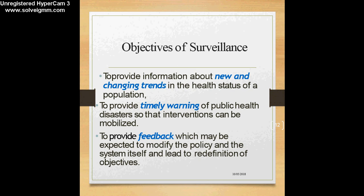The objectives of surveillance: first, to provide information about new and changing trends in the health status of a population. For example, surveillance allows us to know that dengue is always present in a particular population or has a seasonal occurrence — collecting data regularly about the number of new cases, deaths, and localities where dengue is more prevalent.